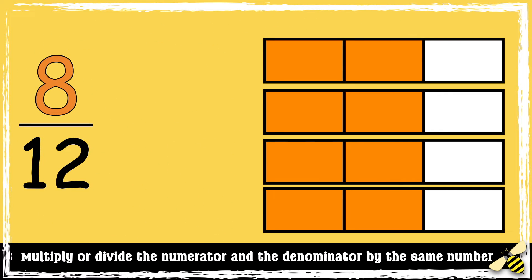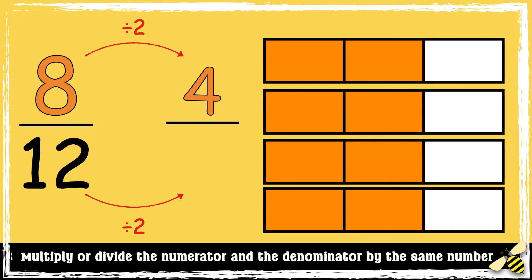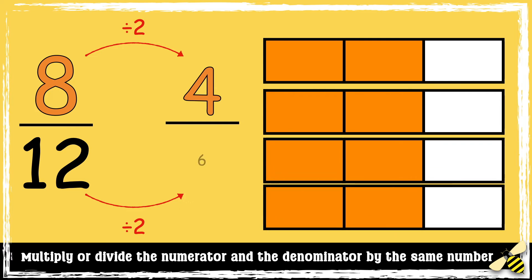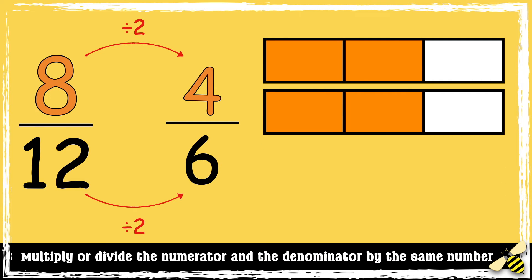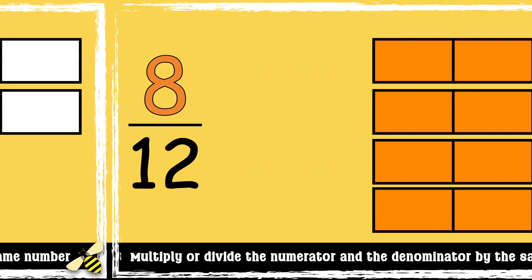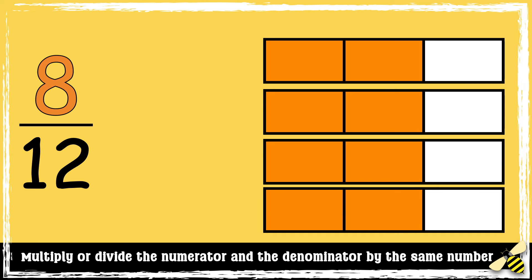Now we have 8/12. We can also divide, as well as multiply, to find an equivalent fraction. If I divide the numerator by 2, I also have to divide the denominator by 2. So 8 divided by 2 is 4, and 12 divided by 2 is 6 — so 8/12 is equivalent to 4/6.